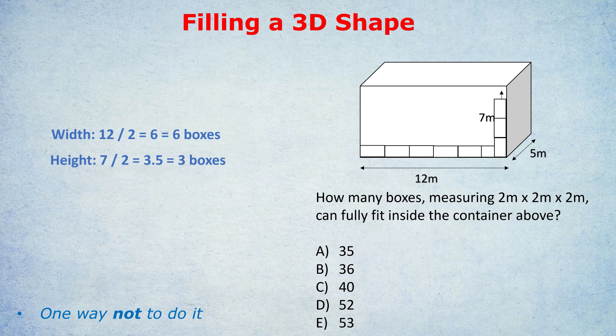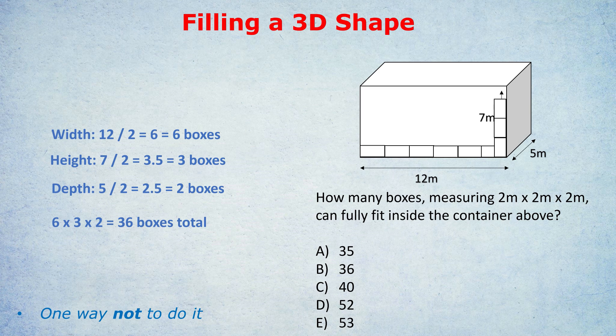What about the last dimension, the depth of 5 meters? 5 divided by 2 is 2.5, so we could only fit 2 boxes going that dimension. What does this tell us if we can fit 6 boxes width-wise, 3 boxes height-wise, and 2 boxes depth-wise? Well, we can fit 6 by 3 by 2 boxes. 6 times 3 times 2 is 36 boxes. So that's how many boxes we can fit, given they're solid shapes that we can't cut up.